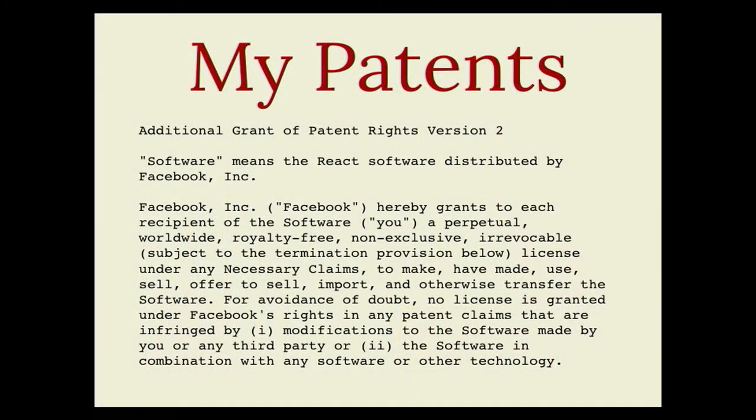The first kind of interaction between software patents and open source that we're usually worried about is: I or my company want to open source some code and we are asserting that we own a patent that covers some aspect of this code. So we could put it up with an MIT license, but no one can actually use that code without risking being sued for patent infringement. This particular case can be handled using an auxiliary patent grant. For example, this is part of the text from Facebook's auxiliary patent grant — though don't use that as an example, they're getting a lot of flack for that one at the moment.